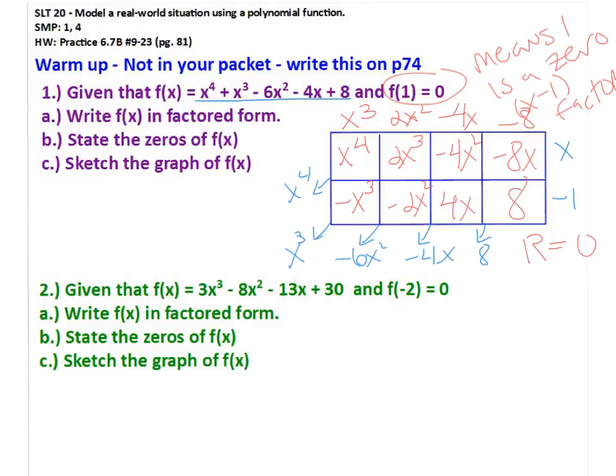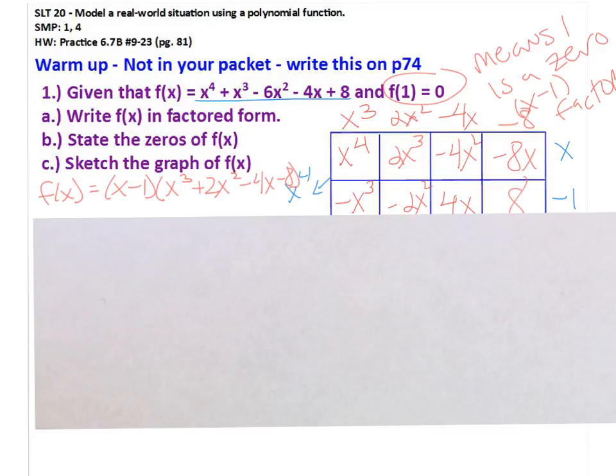So now for f of x, we have that x minus 1 is a factor, and the remaining factor is x to the third plus 2x squared minus 4x minus 8. So we have to factor completely, let me get myself some more space here, and we can factor the remaining polynomial by grouping, so I can take out an x squared and a negative 4, regroup.